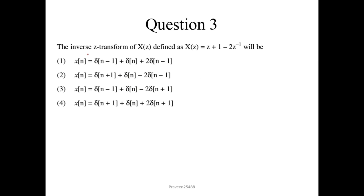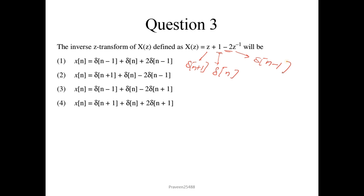Question number 3. The inverse Z-transform of X(Z) = Z + 1 - 2Z⁻¹. The inverse Z-transform of 1 is the impulse δ(n), inverse Z-transform of Z is δ(n+1), and inverse Z-transform of Z⁻¹ is δ(n-1). So x(n) = δ(n+1) + δ(n) - 2δ(n-1). The correct option is 2.